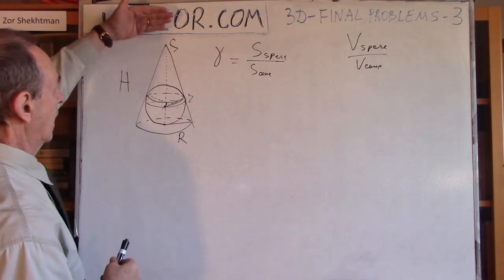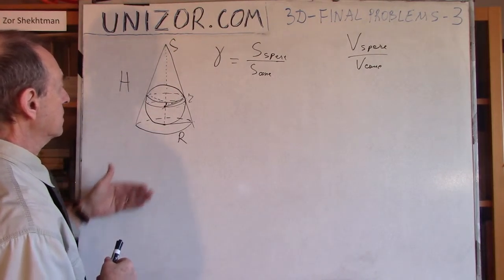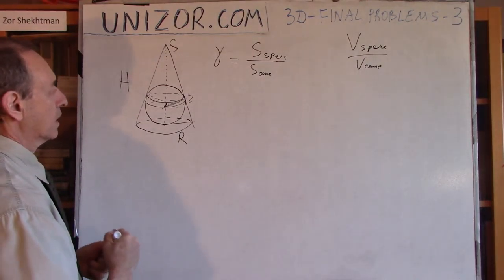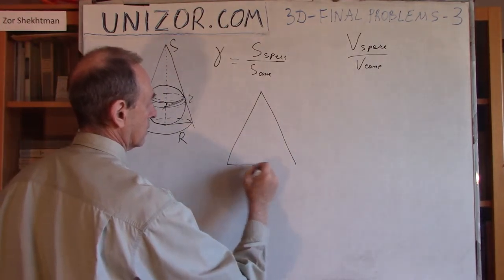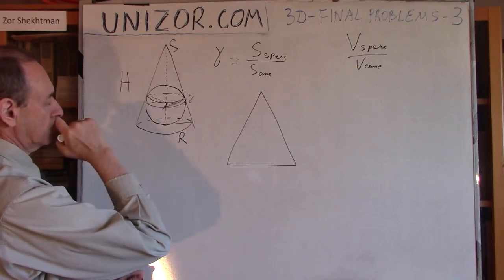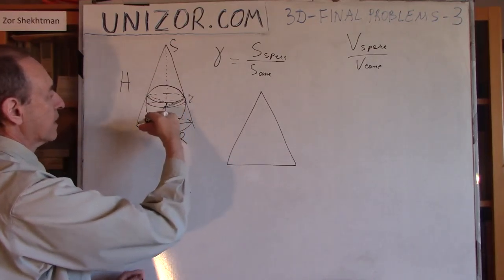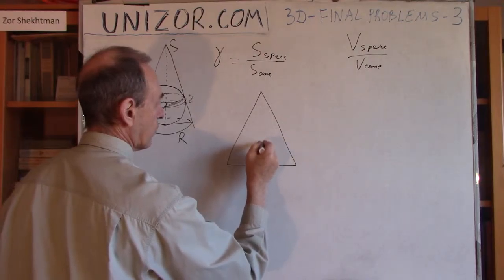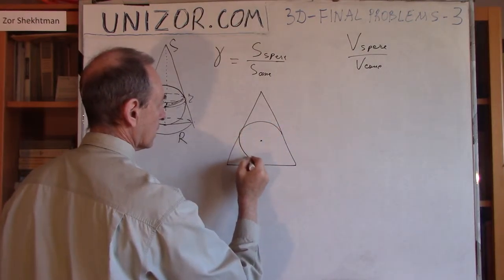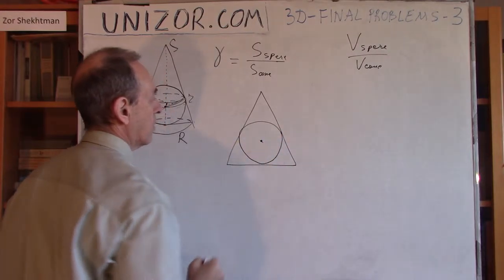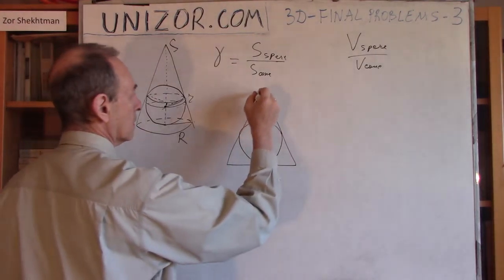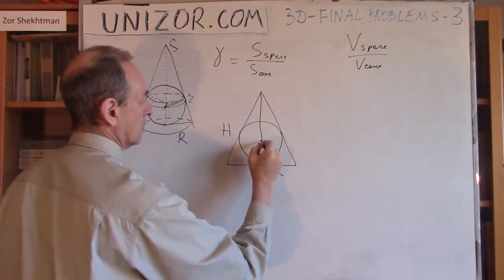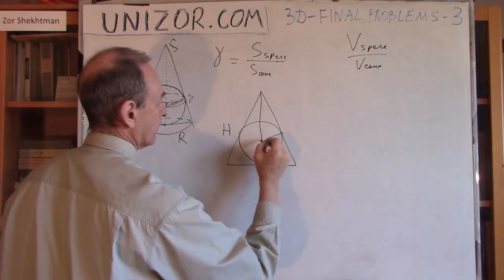What I do is cut the whole thing by a plane which goes through the altitude of the cone. The cone will be cut by a triangle. The surface of a sphere would be cut by this plane and the result would be, since it goes through the center, a circle. For obvious reason, this circle is inscribed into a triangle. What do I know about the radius of the inscribed circle if you have dimensions r and h? This would be lowercase r, this would be lowercase r.